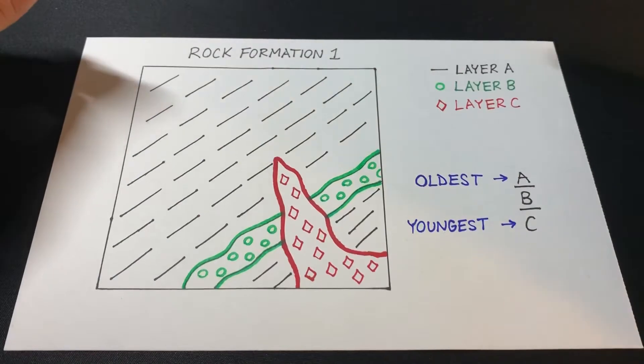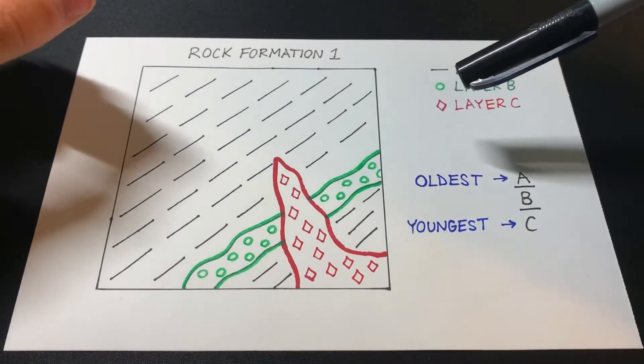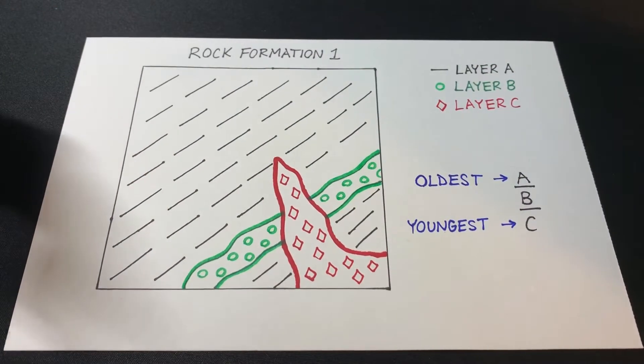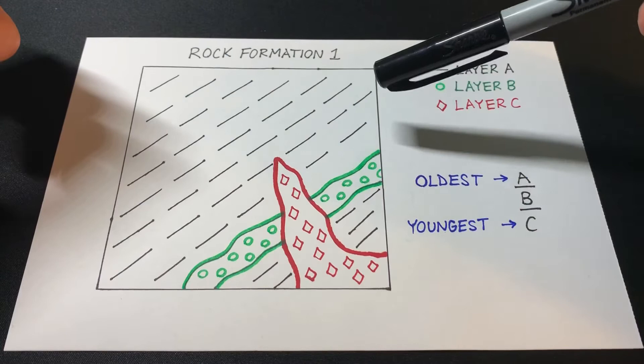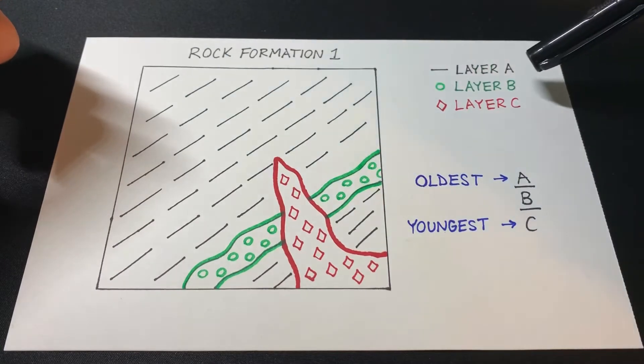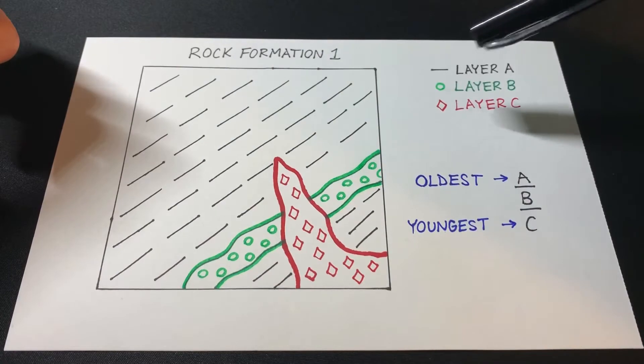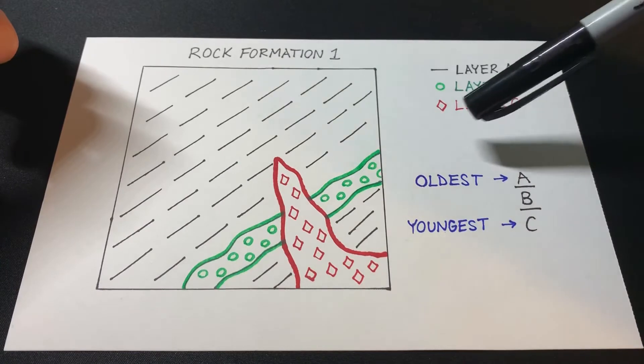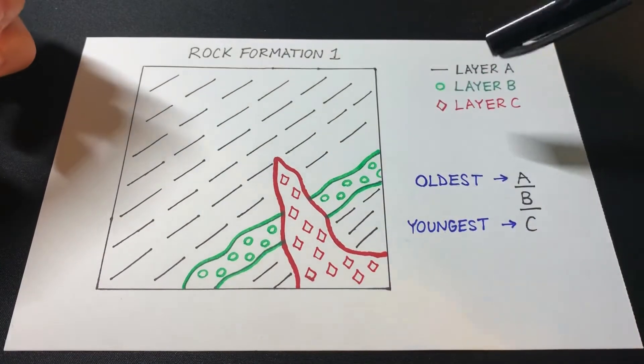So here I've laid out for you guys rock formation one, and I drew up this basic figure to help you guys better understand the principle of cross-cutting relationships. I have three rock layers here, and I have a key indicating that rock layer A is the black hash layer, rock layer B is the green circled layer, and rock layer C is the red diamond layer.